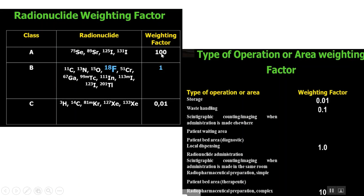Based on the type or area of operation, there are different weighting factor values. For storage with no active operations, the weighting factor is very low at 0.01. For simple administration areas, the weighting factor is 1, reflecting active work with radioactive material. You multiply the administrative activity by these two weighting factors to classify the hazard of any nuclear medicine facility.